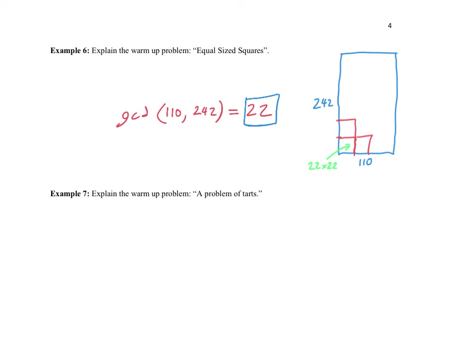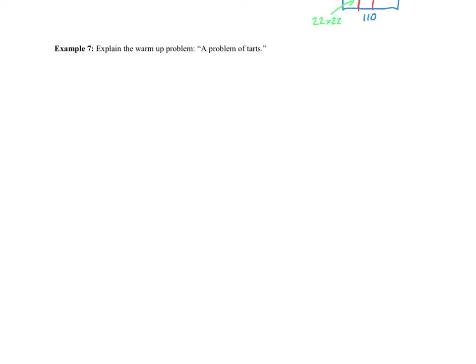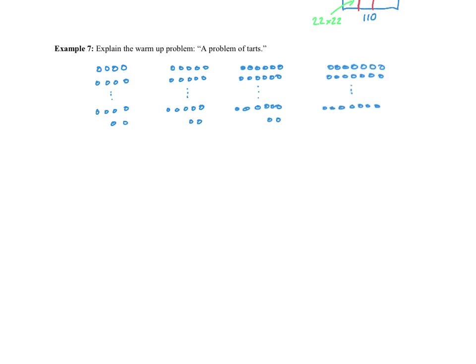Now the tarts problem. A baker has baked 16 dozen tarts and wants to arrange them in rows with no leftovers. Rows of 4: 2 left over. Rows of 5: 2 left over. Rows of 6: 2 left over. But rows of 7 work perfectly. Our job is to figure out exactly how many tarts are in the display, which tells us how many were sold.